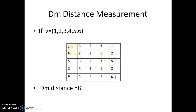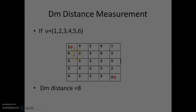We choose a vertical path. Moving from p, we go: vertical, vertical — each time checking diagonals and finding intersecting pixels in V, so we continue vertically. Then we move vertical, vertical, horizontal, horizontal, horizontal, reaching Q. Counting the steps: 1, 2, 3, 4, 5, 6, 7, 8. So the Dm distance is 8.